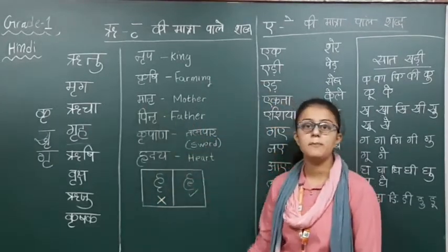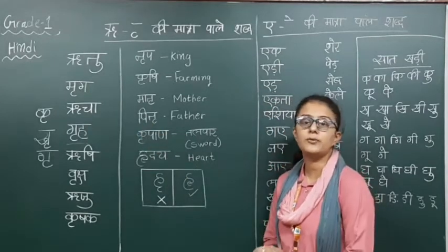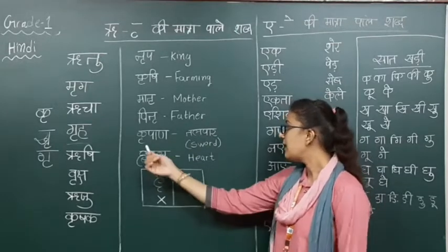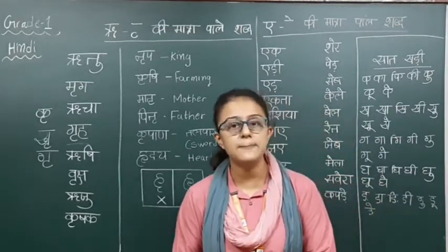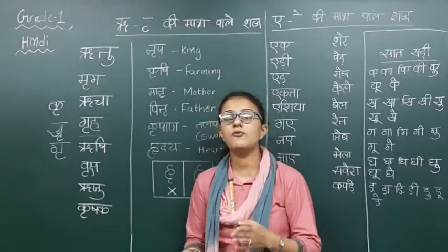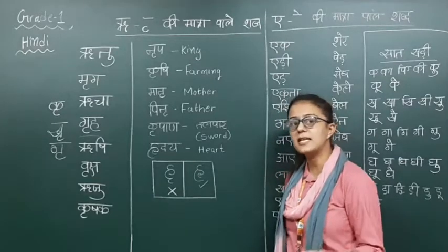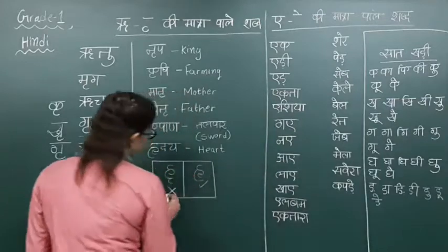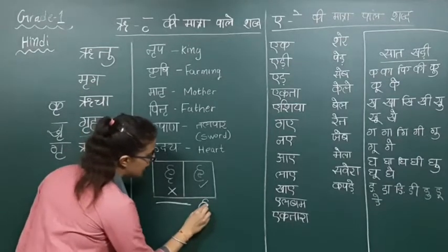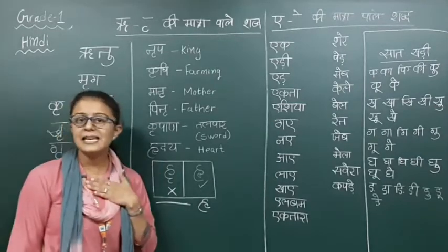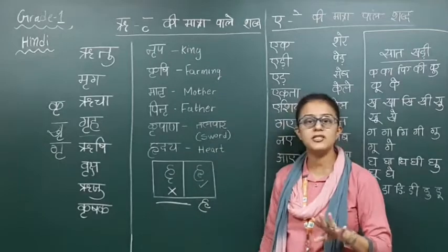Next is kirpaan. What is kirpaan? Kirpaan is a sword — talvaar, usse bolti hai kirpaan. Sikh families, Punjabi families mein kirpaan ka usage bahot hota hai. Now students, yahaan par ek baat ka dhyan rakhiye — Ruki matra aapko neeche nahi lagani hai. Jab haan banaate hai, to usse ke side mein aise lagayi jaati hai. Hiddir — hiddir yaani ki heart. I hope that Ruki matra wale shabd aap sabhi ko clear honge.